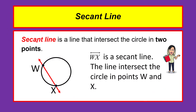A secant line is a line that intersects the circle in two points. We have line W-X. Line W-X intersects the circle at points W and X, so line W-X is a secant line.